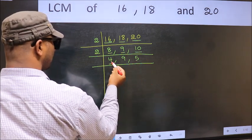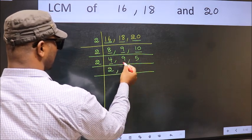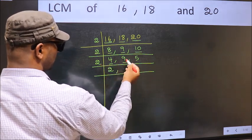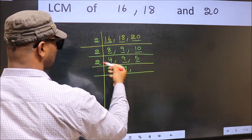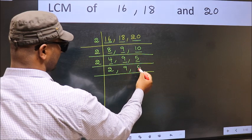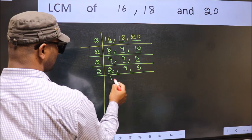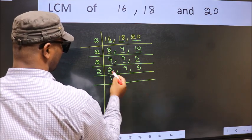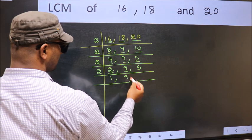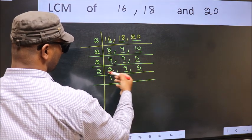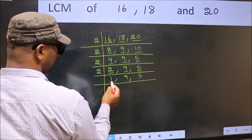Now here we have 4. 2 times 2 is 4. The other number 9 — not divisible by 2, so you write it down as it is. The other number 5 — not divisible by 2, so you write it down as it is. We got 1 here.